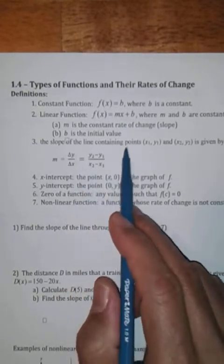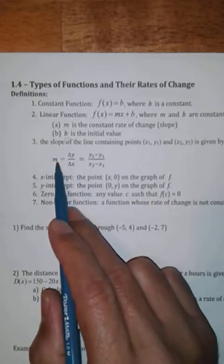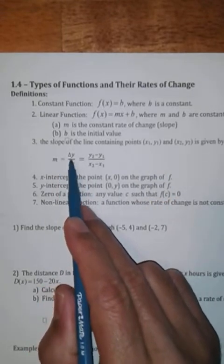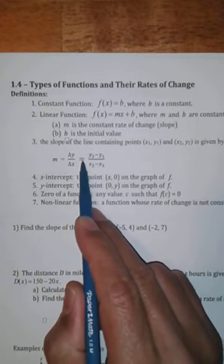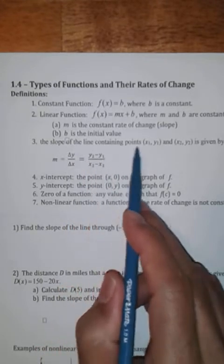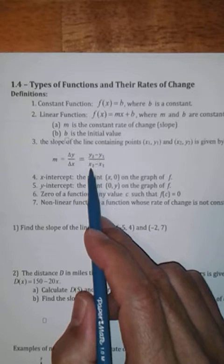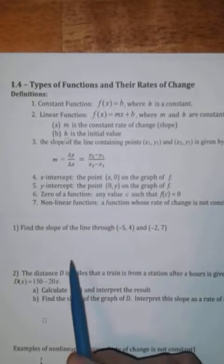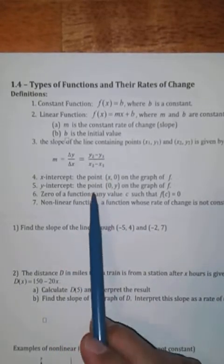The slope of a line containing the points (x₁, y₁) and (x₂, y₂) is given by the slope equals the change in y over change in x, which can also be found by the formula (y₂ − y₁) / (x₂ − x₁). Some of you may be familiar with that.